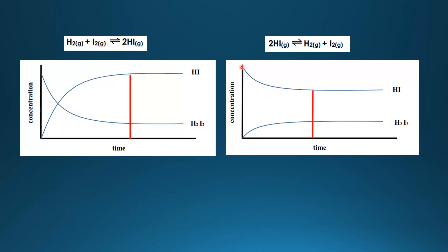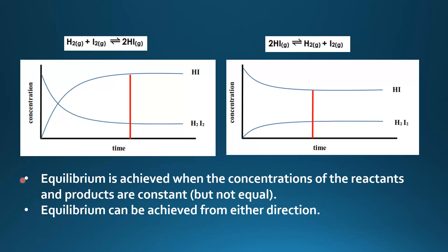On the right graph, the concentration of hydrogen iodide decreases as it decomposes into hydrogen and iodine, while the concentrations of hydrogen and iodine increase. The red line shows where all concentrations become constant. From these two graphs we can see that equilibrium is achieved when concentrations are constant but not equal. Equilibrium can be achieved from either direction — by hydrogen and iodine reacting to form hydrogen iodide, or by hydrogen iodide decomposing into hydrogen and iodine.